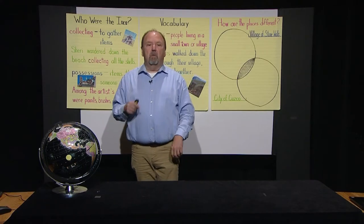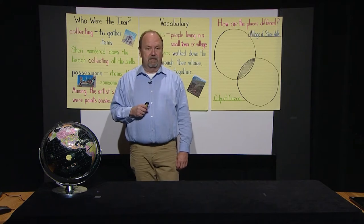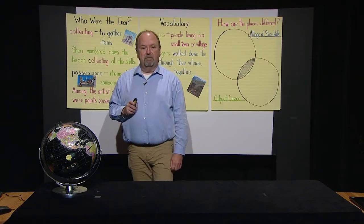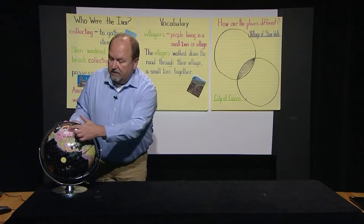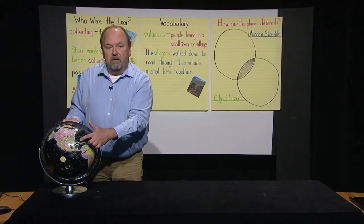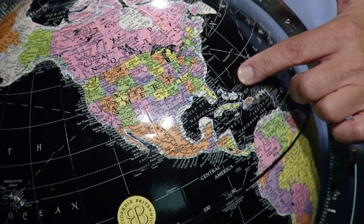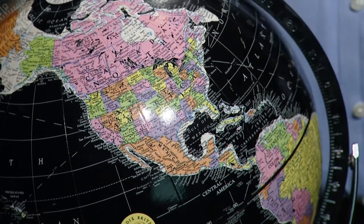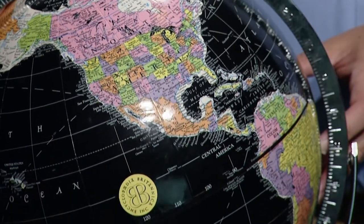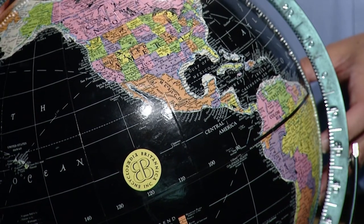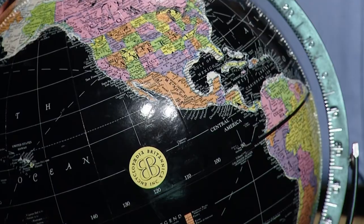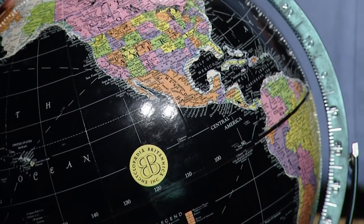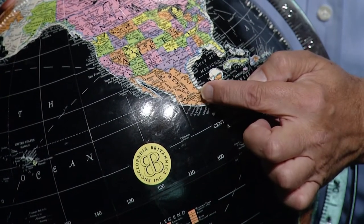So now, let's talk about where the Inca lived. I have a globe with us today so that we can find where in the world the Inca lived. We'll begin by looking at the Americas. This is North America. This is where our country, the United States of America, is located, along with our neighbors of Mexico and Canada. If you remember from earlier lessons, point to where the Maya lived. That's right — I saw several of you pointing to our globe in North and Central America. You are exactly right. The Maya lived in Mexico and Central America.